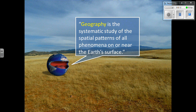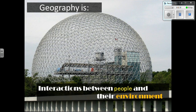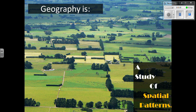Spatial can be something very local, like the spatial distribution of students at Peachtree Ridge, or it can be global, like the spatial interaction between religions around the world. Geography is the scientific, descriptive study of the Earth's surface — literally meaning the study of the Earth — covering both the physical and the human aspects: the interactions between people and their environment, and the study of spatial and local variation, from widespread to global versus local.